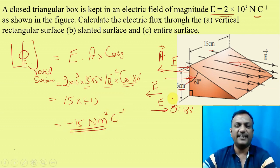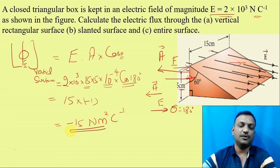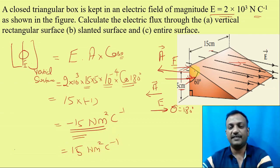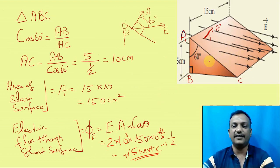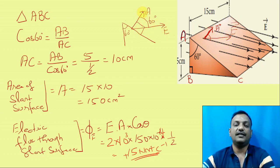The flux is negative when it enters, and positive when it exits. So in the vertical surface the flux is minus 15 Newton meter squared Coulomb to the power minus 1. Next, for the slant surface, the slant phase makes 60 degrees with the vertical. The angle between the two lines equals the angle between their perpendiculars. So the angle between the electric field and the area vector for the slant surface is also 60 degrees.